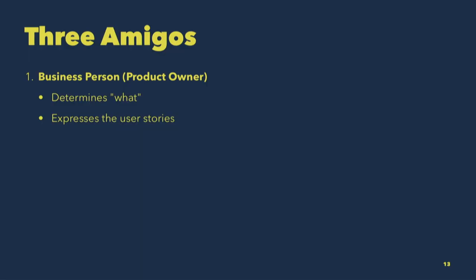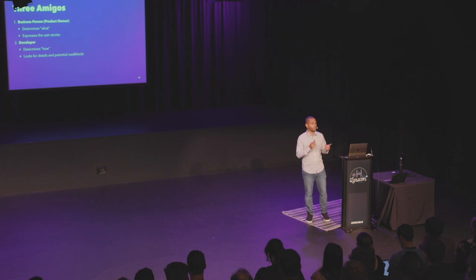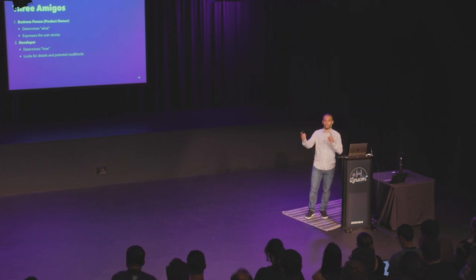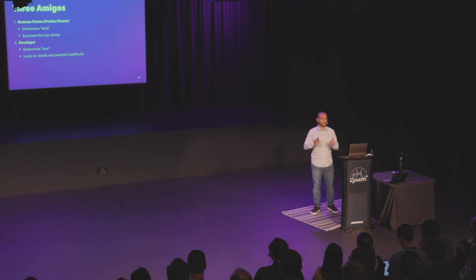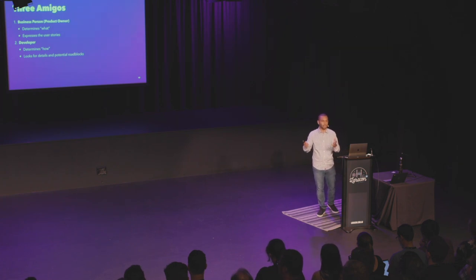They express the 'what' through user stories. The developer will also be there, determining 'how.' The business person said we need to do this, and the developer says — okay, we can integrate with this service to handle this piece, and then write this other thing. They're looking for details and potential roadblocks. They might say, 'hey, you said a user goes from here to here, but we actually need an intermediary step because the data won't be complete until they complete this other step.'